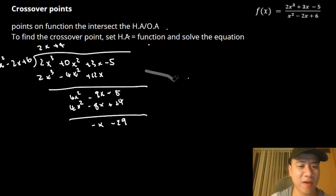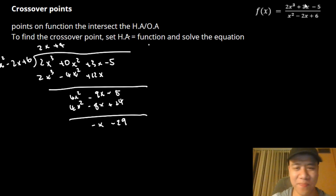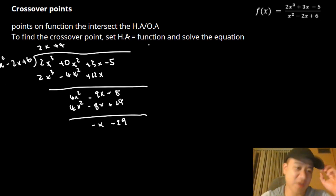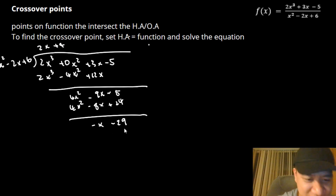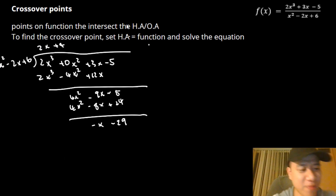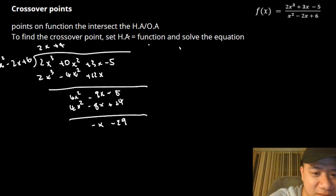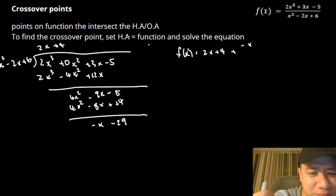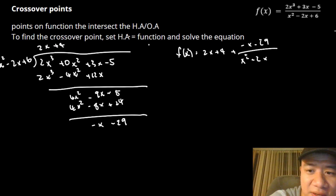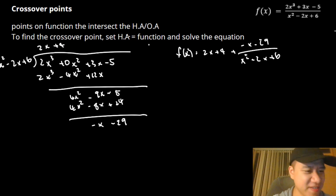Now let's do an oblique asymptote example — slightly more complicated, but the process is the same. I've already done the long division to save time. The degree at the top is bigger than the bottom, so we have an OA. We write the function in remainder form: f(x) = (2x + 4) + (−x − 29) / (x² − 2x + 6). You'll see why this form makes solving so much easier.